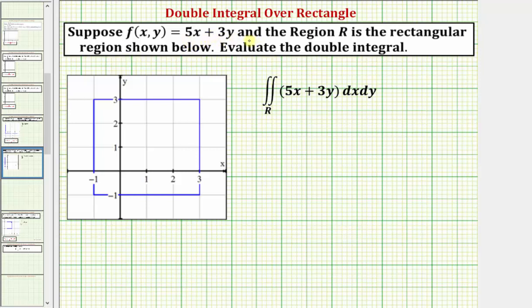Suppose f of x comma y equals five x plus three y, and the region R is a rectangular region shown below on the xy coordinate plane. We're asked to evaluate the given double integral.